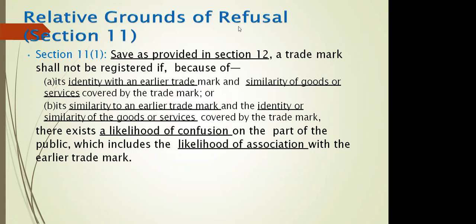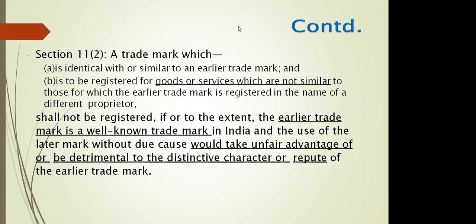The previous slides covered Section 9 absolute grounds of refusal — if your trademark falls under any of those criteria, it will not be allowed under any circumstances. There are also relative grounds of refusal under Section 11 — these are objections that can be overcome by tweaking or making changes to your trademark. If you can provide documentary evidence showing you are not taking unfair advantage or causing detriment to the character or reputation of an earlier trademark, you can overcome the relative grounds of refusal.